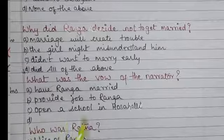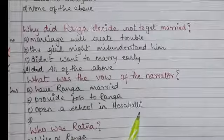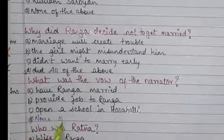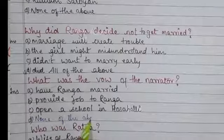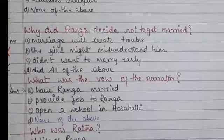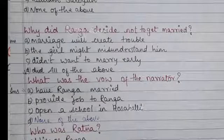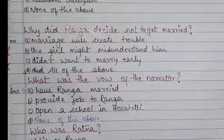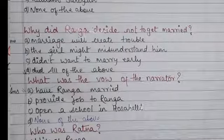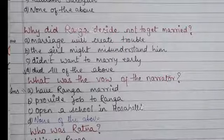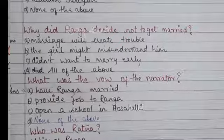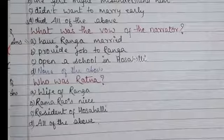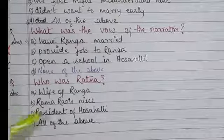What was the vow of the narrator? Option A: Have Ranga married, Option B: Provide job to Ranga, Option C: Open a school in Hosahalli, Option D: None of the above. Option A is correct — to have Ranga married. According to the narrator, Ranga was the right person — educated, understanding, respectful, and caring — who could be a very good husband, so he vowed to have him married soon.